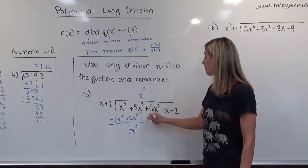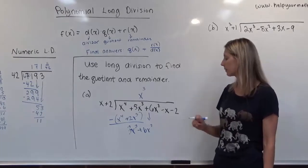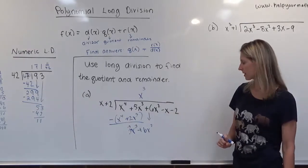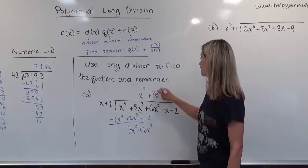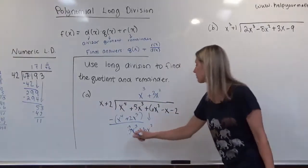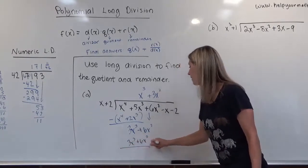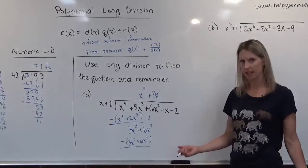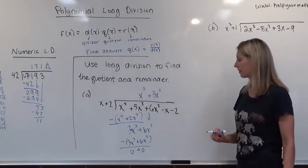Next we bring down the 6x² from the given polynomial. We take the first term 3x³ and divide it by the first term of the divisor x, giving 3x². We multiply 3x² by the divisor to get 3x³+6x², and we subtract. Everything cancels — both terms become 0.